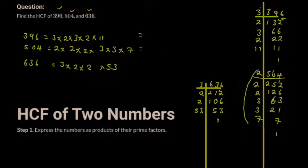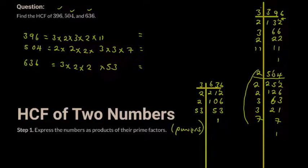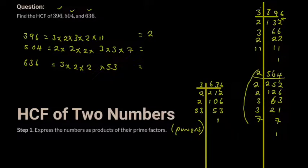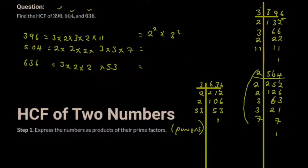Now write equal signs and express your prime numbers in index form. For 396: there are two twos, giving two squared, and two threes, giving three squared, multiplied by 11. So 396 equals two squared times three squared times 11.